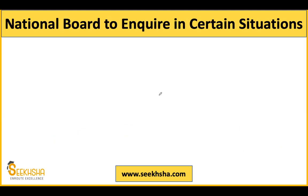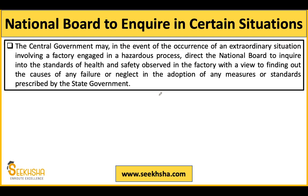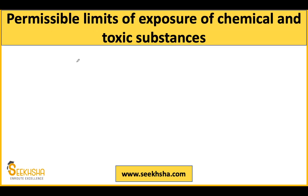There is also a provision for inquiring into certain situations. If the central government feels that an extraordinary situation is occurring in a factory involved in hazardous processes — such as an accident or a problem of national gravity — the central government can order the National Board to inquire whether proper health and safety standards are being followed in the organization, and what measures should be taken if there is failure on the organization's part.